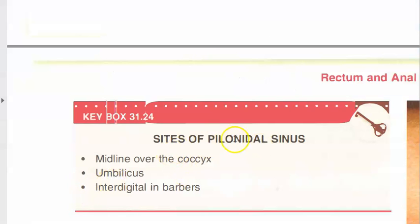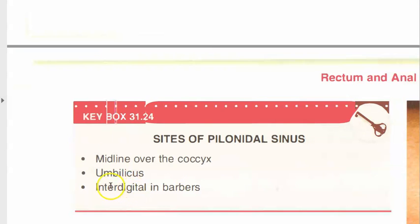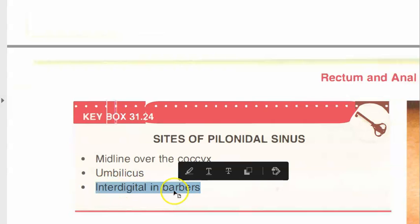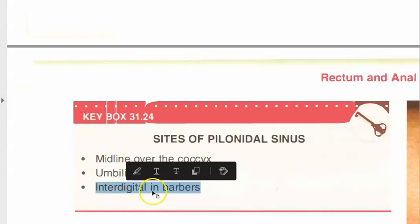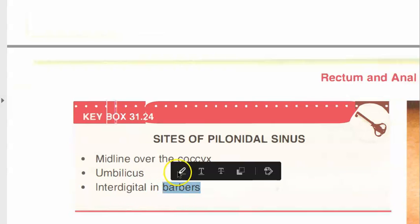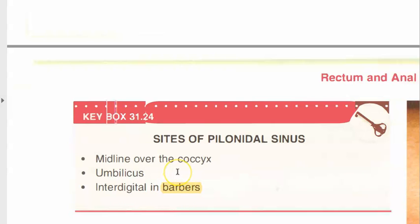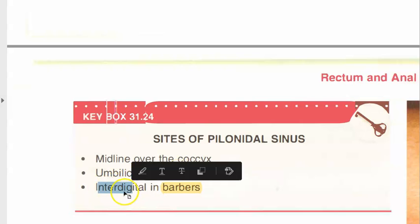Interestingly, pilonidal sinus is not only in the midline over the coccyx - it can also occur in the umbilicus and inter-digitally in barbers, because barbers are always cutting hair and the hair can get between the fingers.